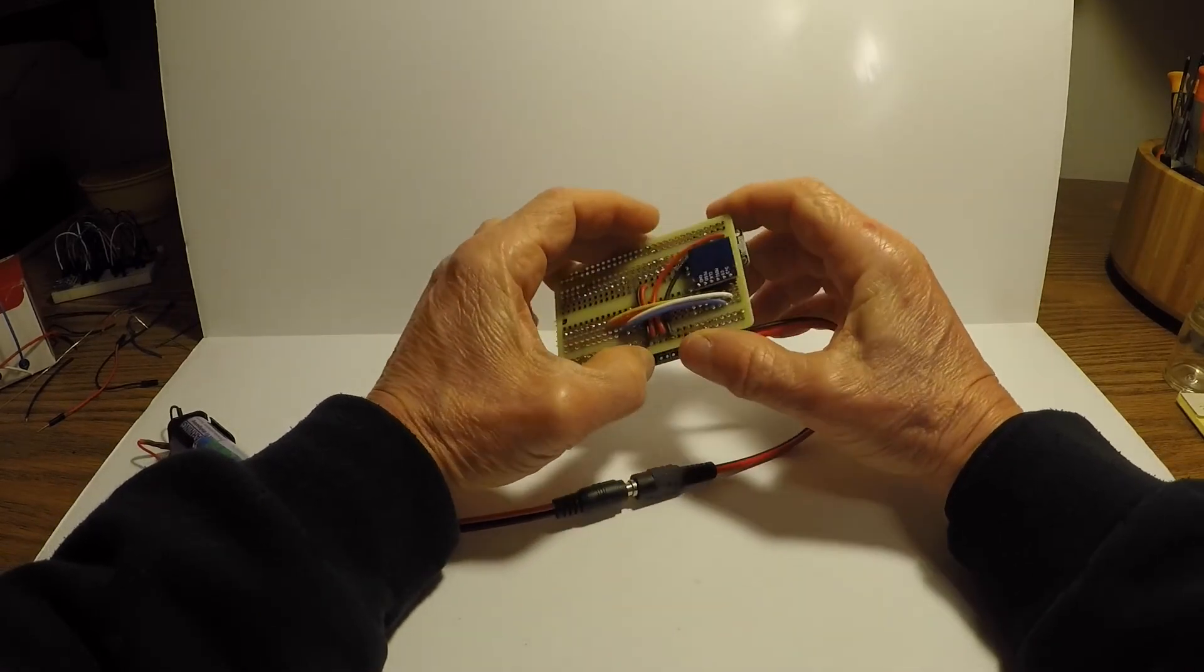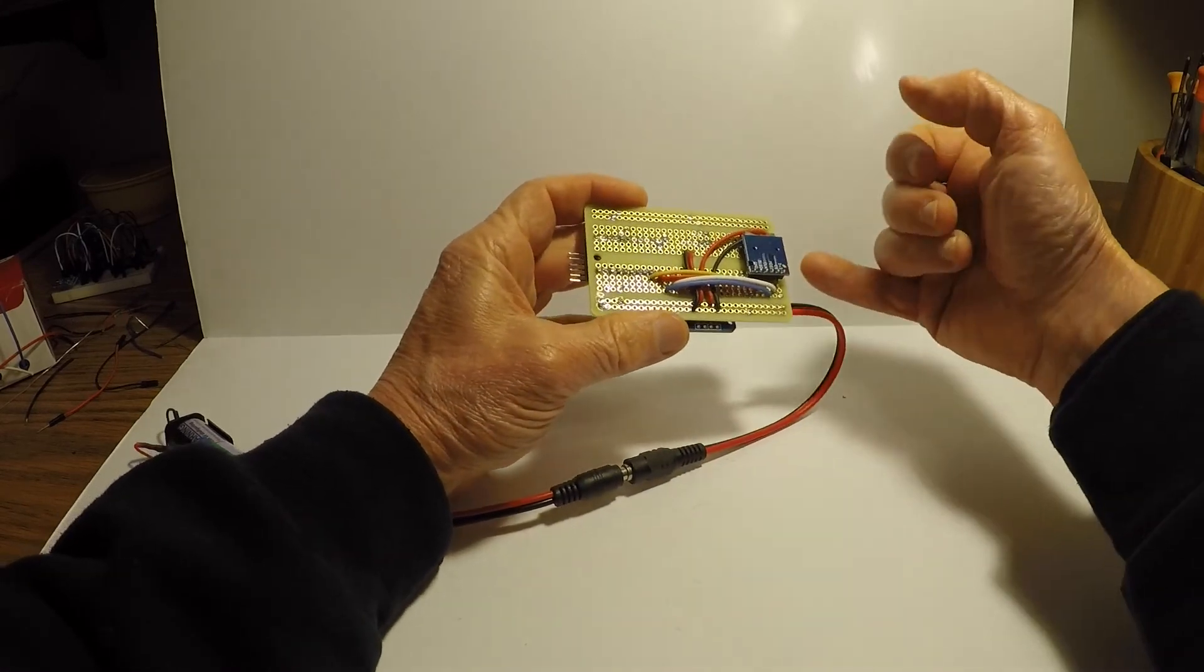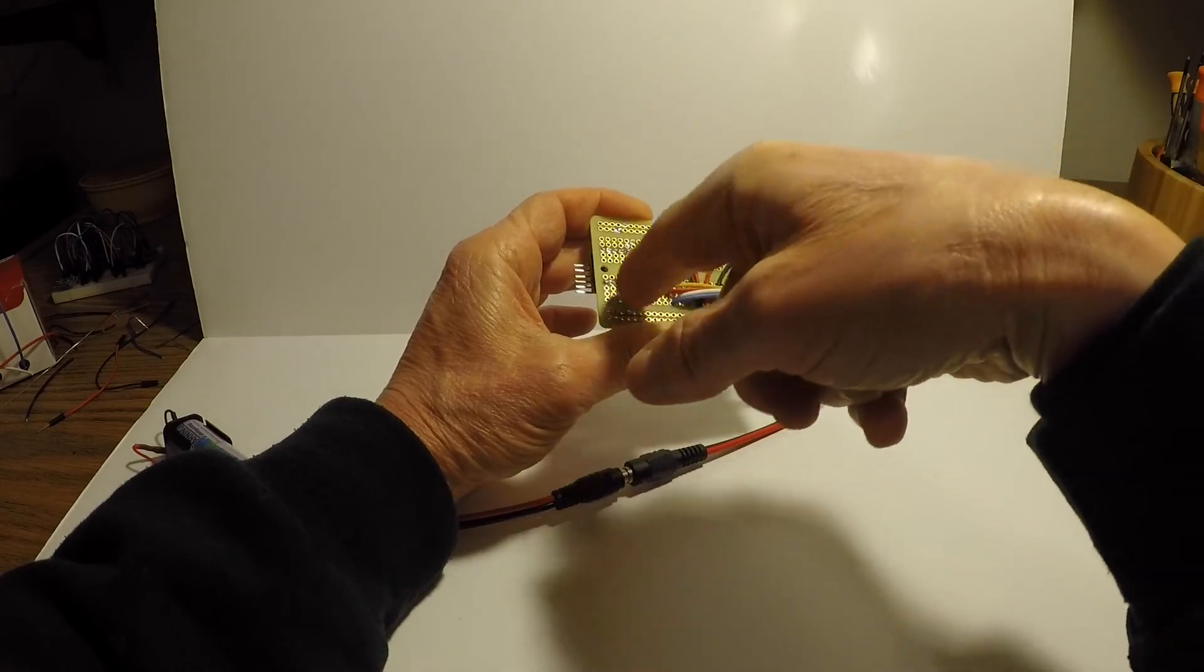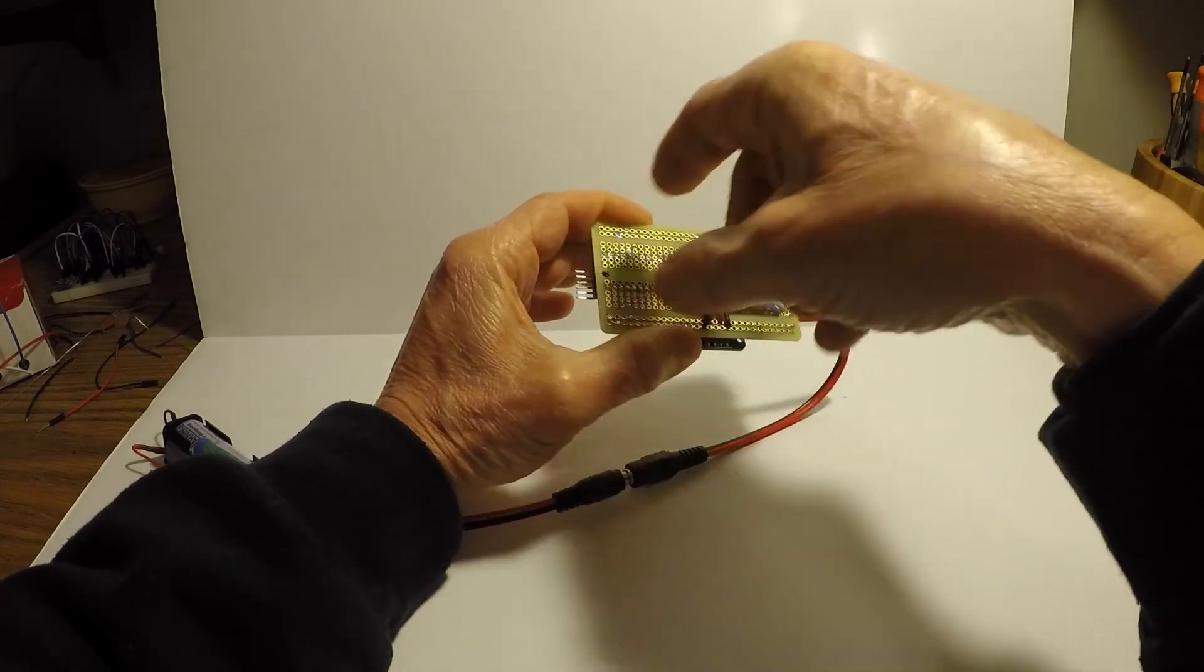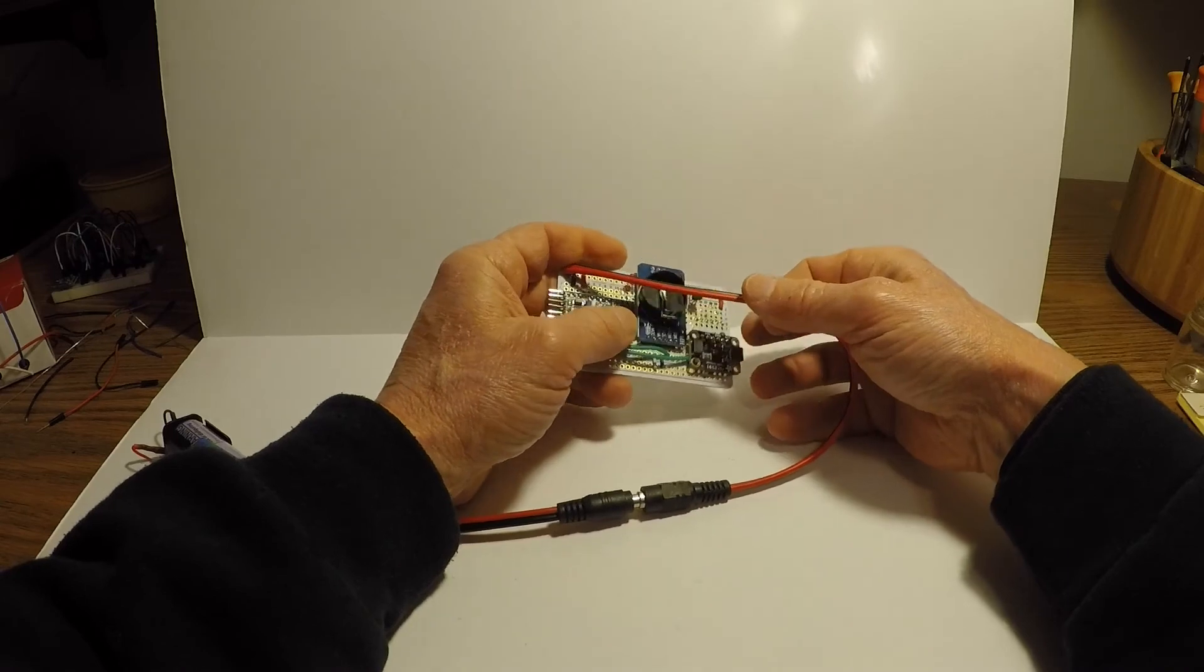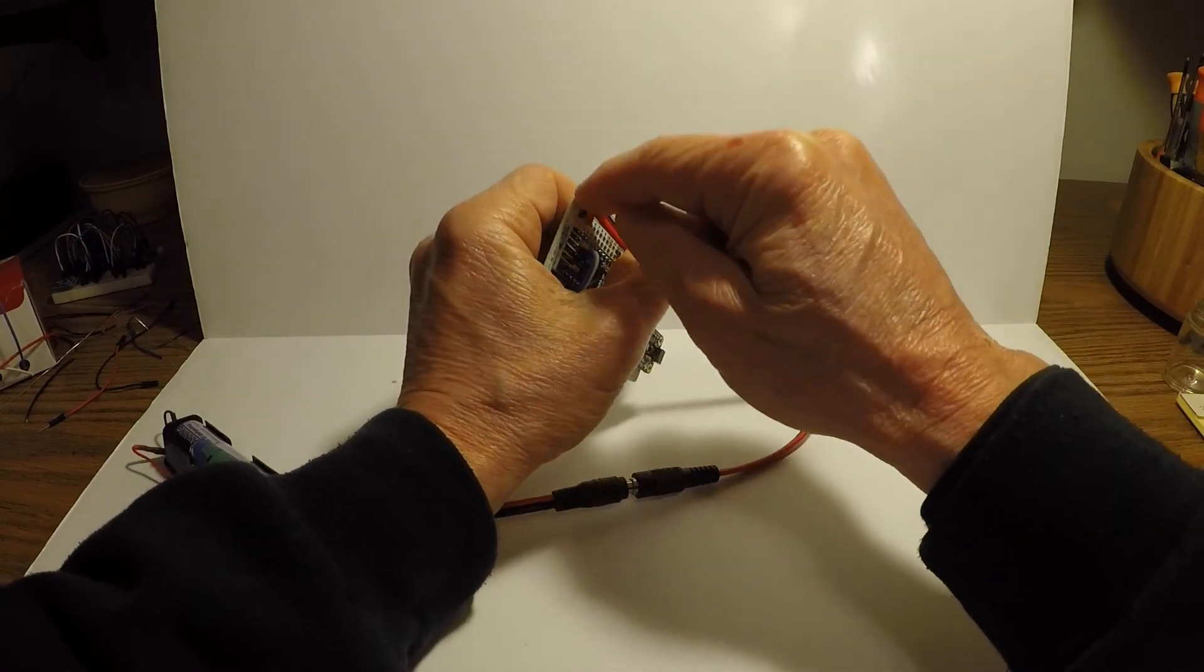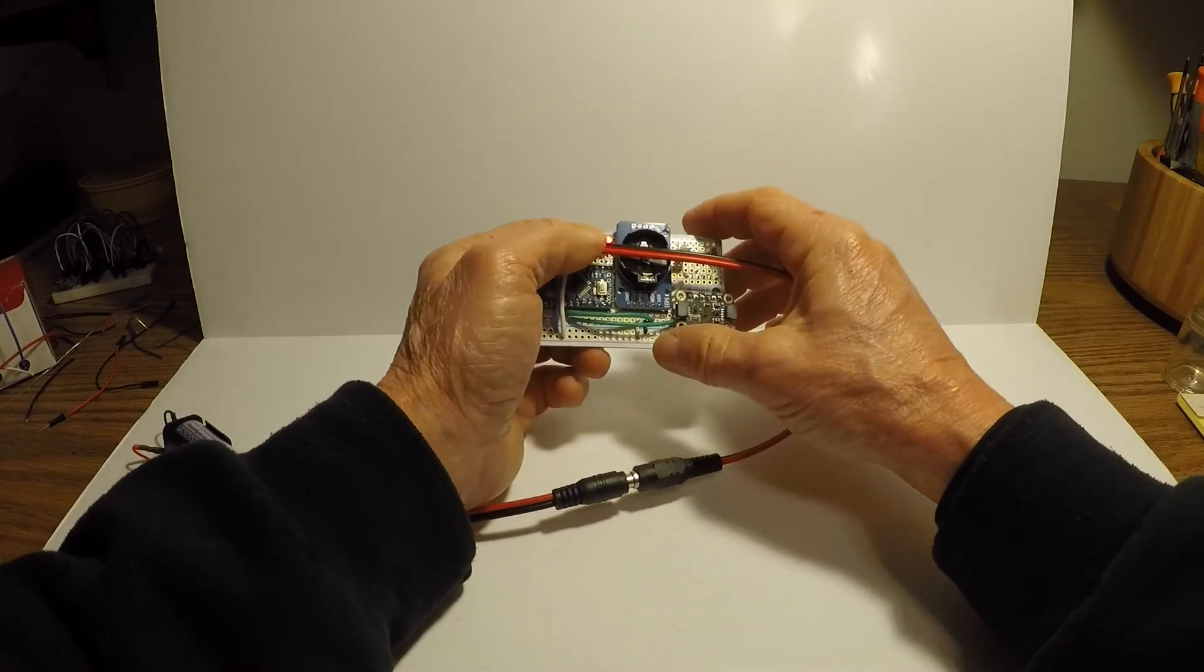You could also sneak that wire underneath the memory card and bring it around to solder from the back side instead. It doesn't matter much. The key point is that you don't want any stress on the solder connectors.